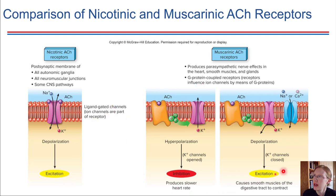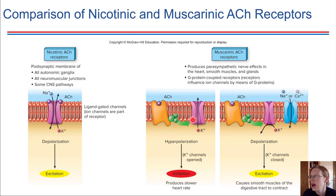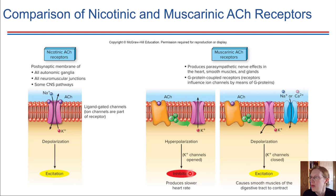Over on the right-hand side are the muscarinic acetylcholine receptors. Acetylcholine binds to its muscarinic receptor, activating the G-protein, which then causes something else to happen in the cell — it could be the opening of another ion channel. Depending on which ion channel is opened, this leads to either hyperpolarization or depolarization, so whether the cell is excited or inhibited differs depending on which ion channel was activated by the specific G-protein.